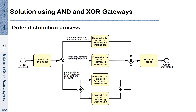This process can be represented using AND and XOR gateways. When an order is received, the order line items are checked and we approach the first XOR gateway. This XOR gateway is a split distinguishing three conditions: either the order only contains Amsterdam products, or only Hamburg products, or both Amsterdam and Hamburg products. If both are included, an AND split separately forwards the corresponding suborders to the Amsterdam and Hamburg warehouses. An AND join synchronizes these two branches. Finally, an XOR join merges these alternative branches such that the order is registered and completed.